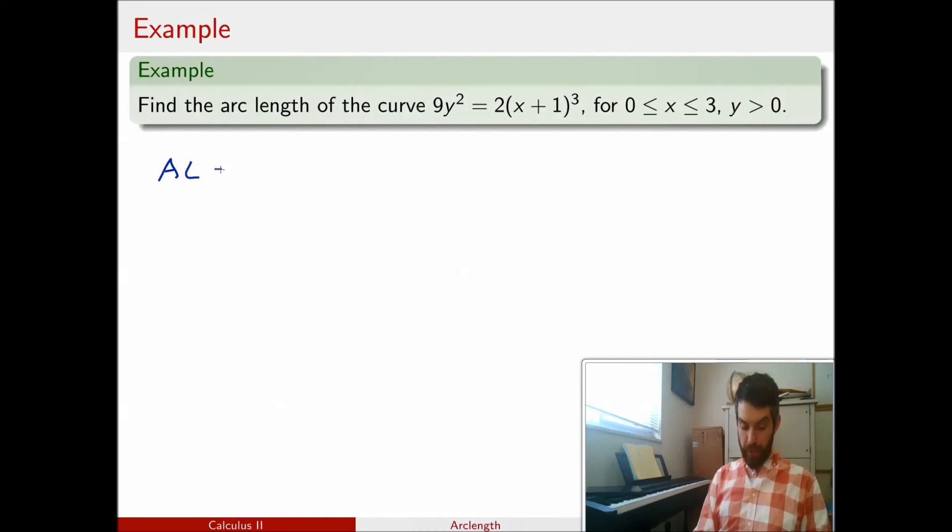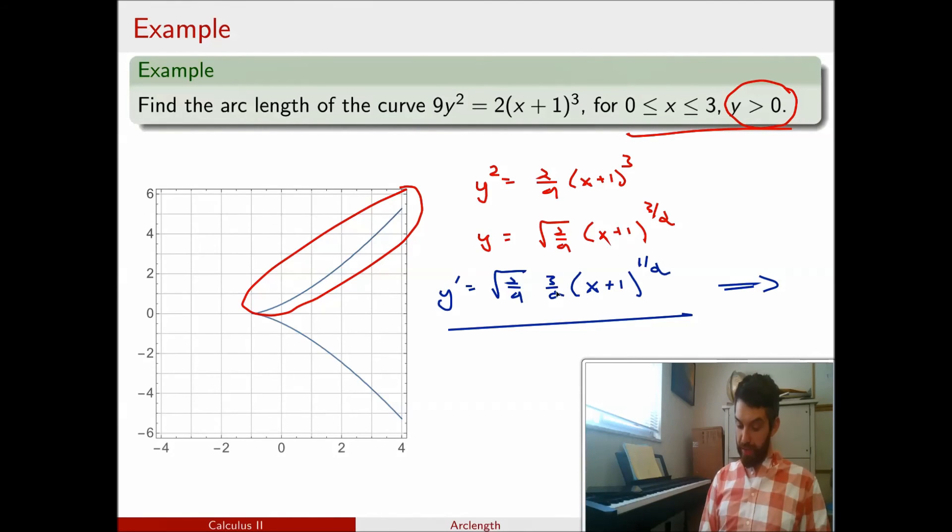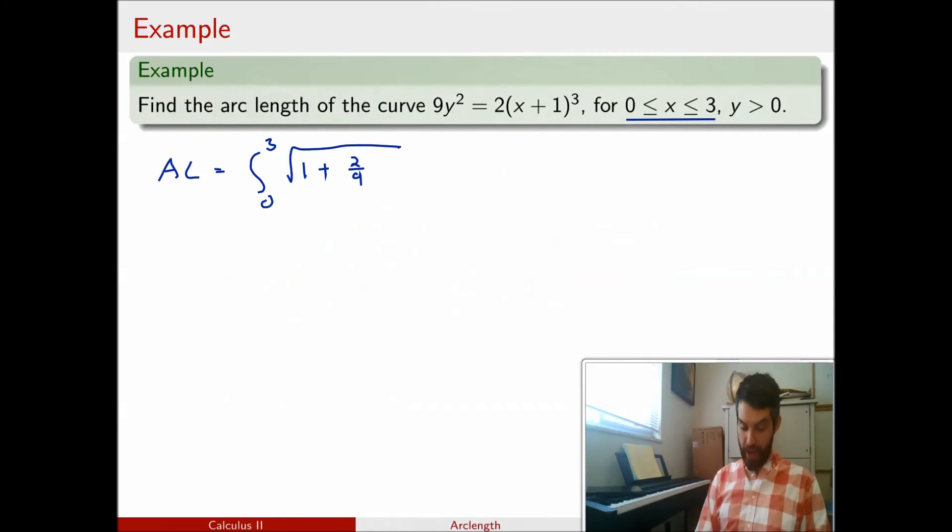So my arc length formula is going to be an integral from x = 0 up to x = 3. That's reading off my restriction on the domain that I have up here. Copying and pasting most of this, square root of 1 plus, and now comes a time where I have to put in the derivative squared. So I had that square root of 2/9, so squaring that becomes 2/9. And then I had a factor of 3/2 that's going to get squared, and then (x + 1) to the power of 1/2. So I have the 9/4, that's the 3/2 squared, and then (x + 1) square rooted squared, is going to look like that. So that's what I have up here.